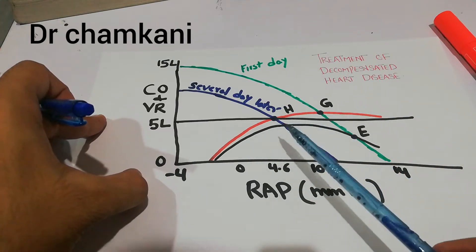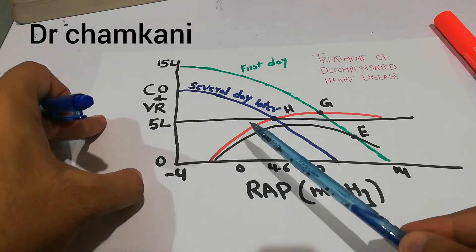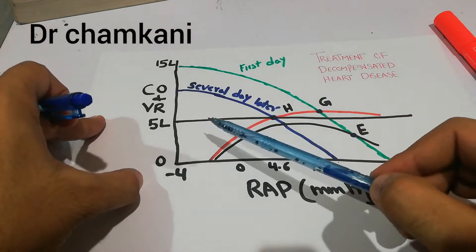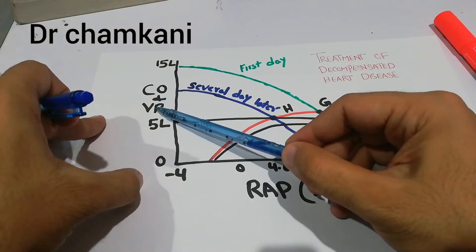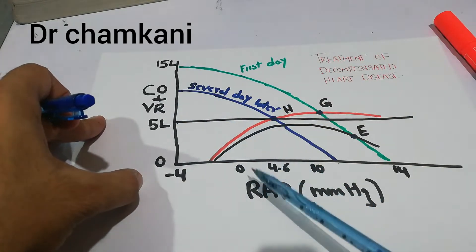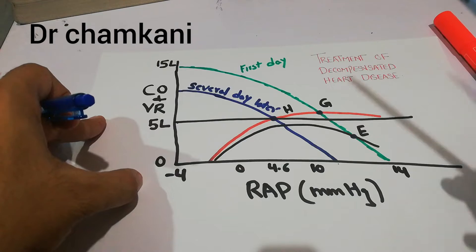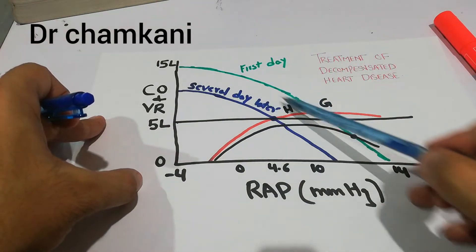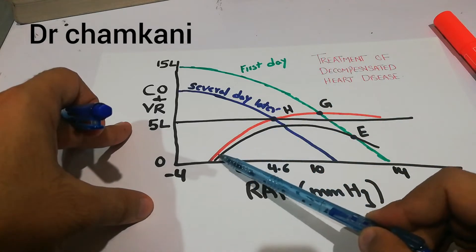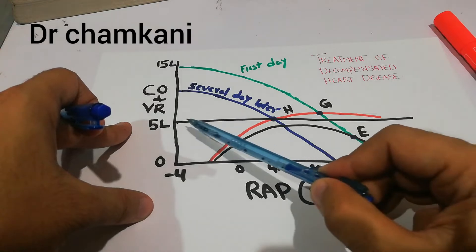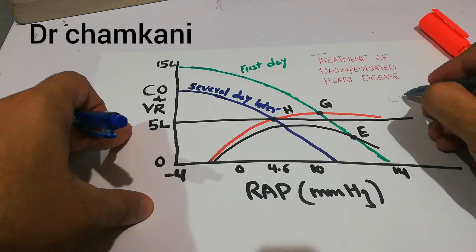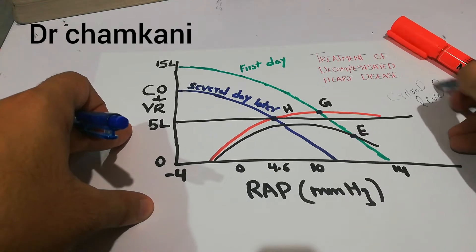To summarize, in this graphical analysis we have cardiac output and venous return on the y-axis, and right atrial pressure and mean systemic filling pressure on the x-axis. Here we have the cardiac output curve and the venous return curve. The 5-liter mark is basically a critical level for fluid balance.